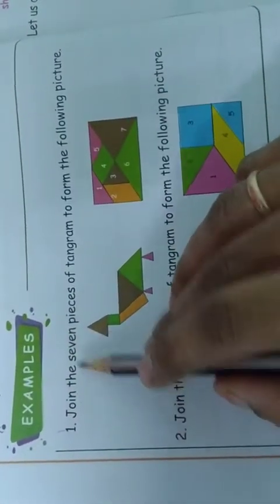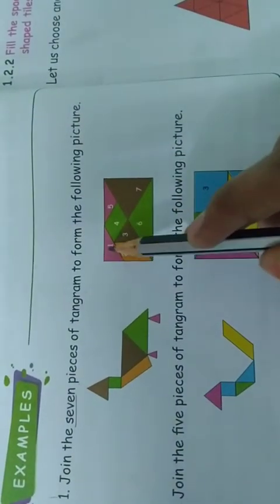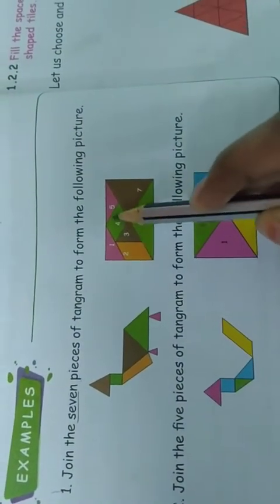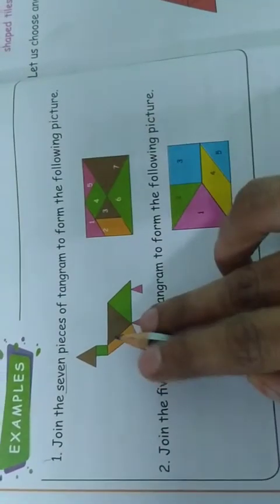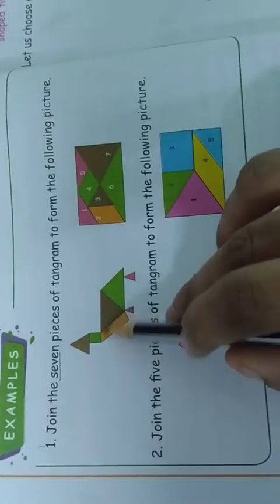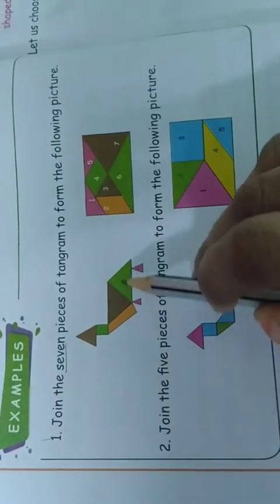Now for the example: join the 7 pieces of tangram to form the following pictures. There are 7 pieces: 1, 2, 3, 4, 5, 6, 7. When we join these 7 pieces, we get this first picture. Same like that, here there are 5 pieces of tangram. When we join these 5 pieces, we get this second picture.